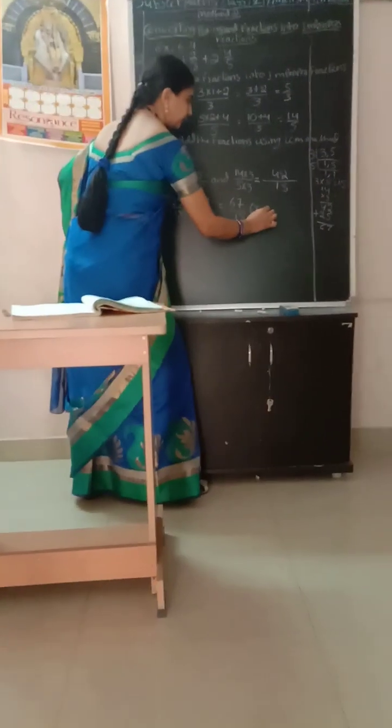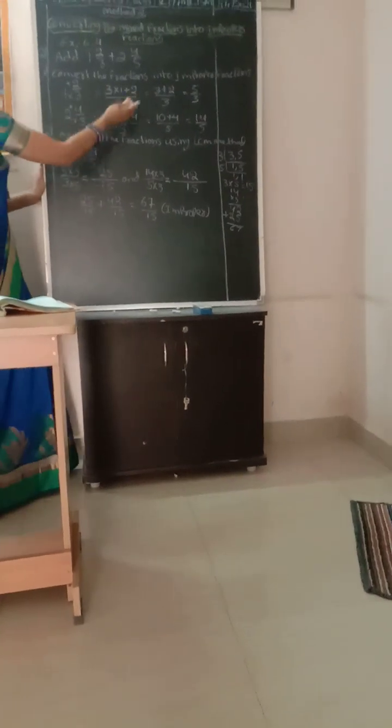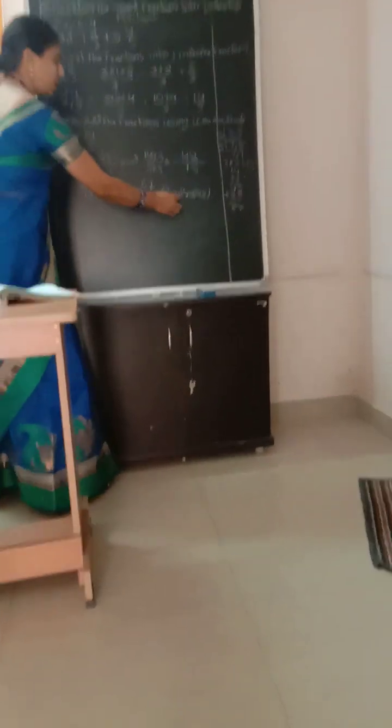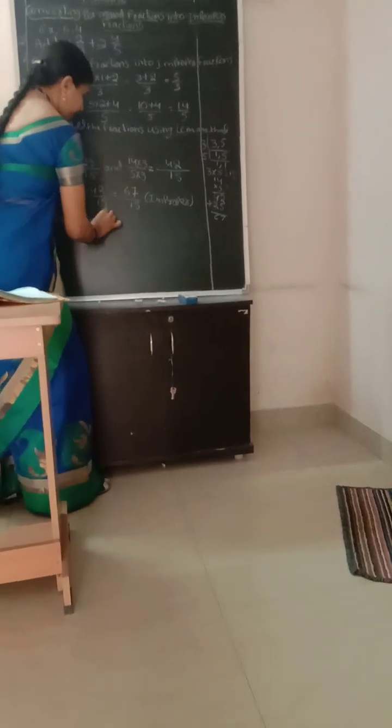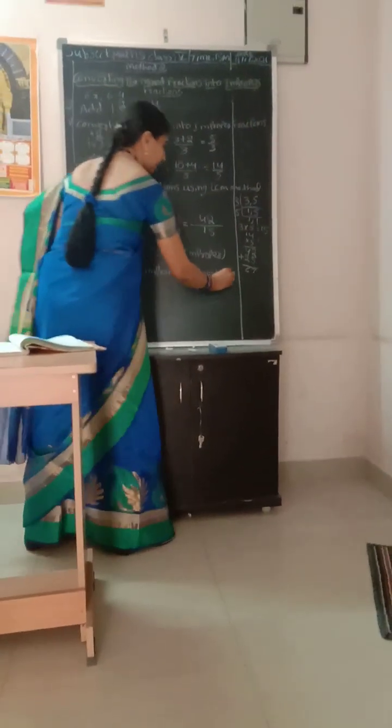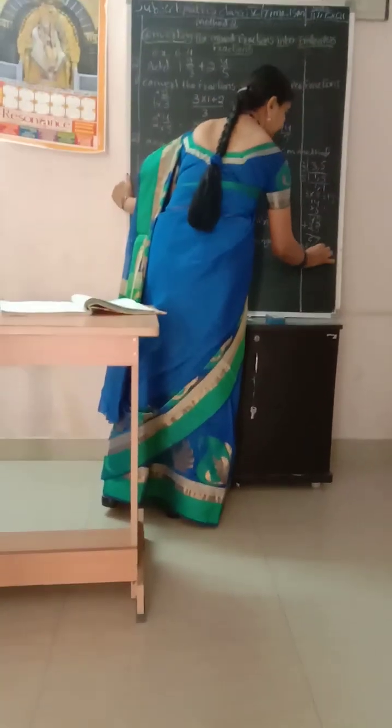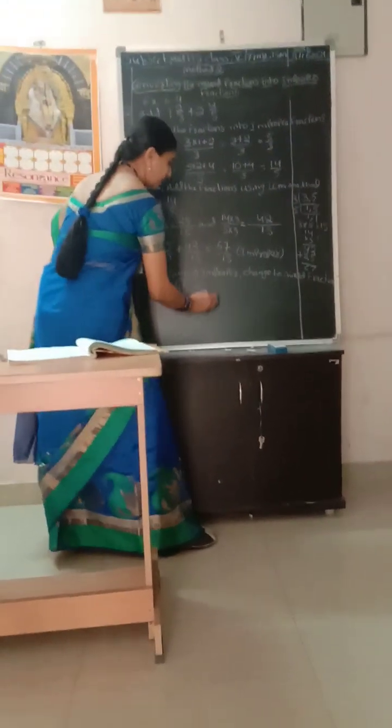Improper or proper? Improper. We are working with improper fractions, so your answer is also improper. In step 3, if the sum is improper, change it to a mixed fraction. The fraction is 67 by 15.